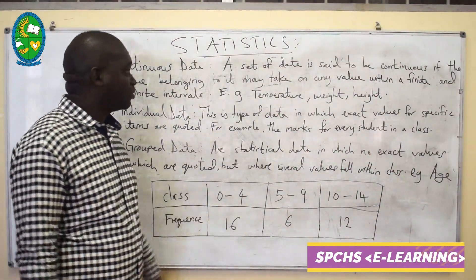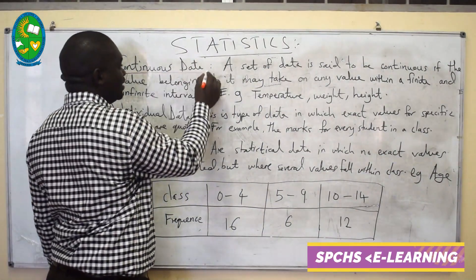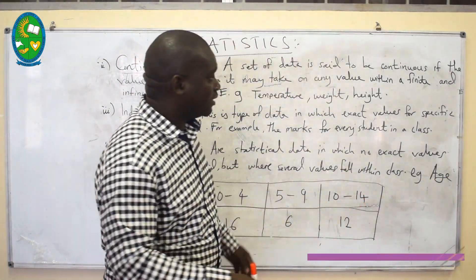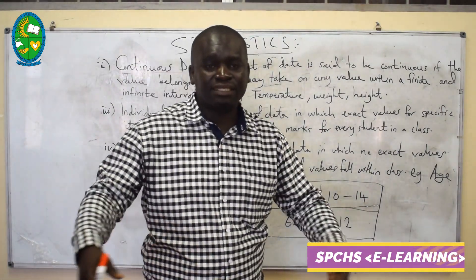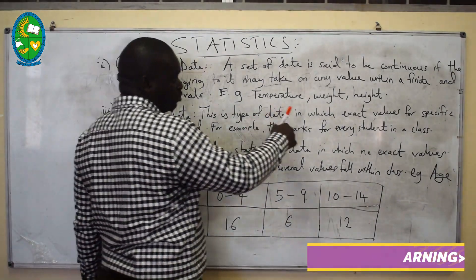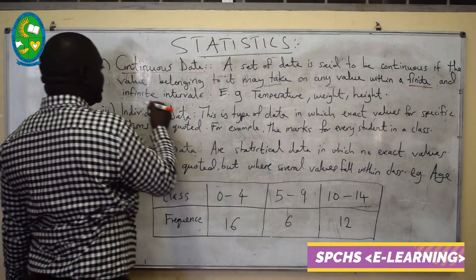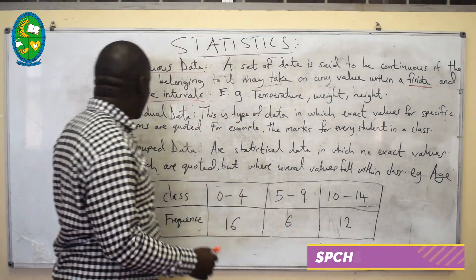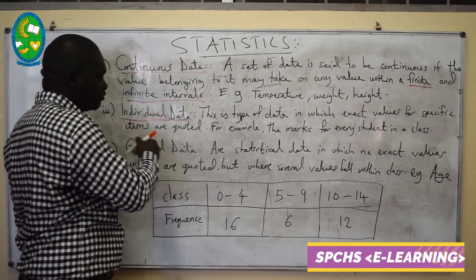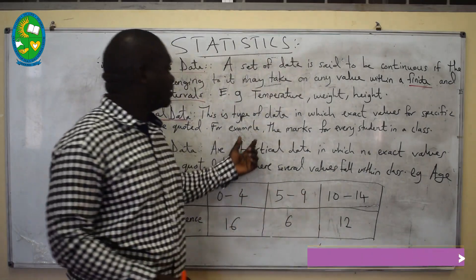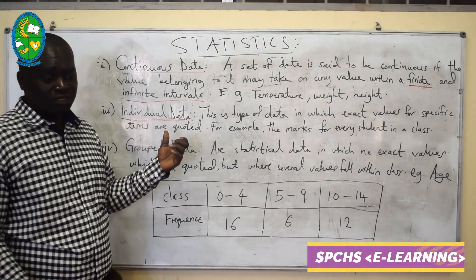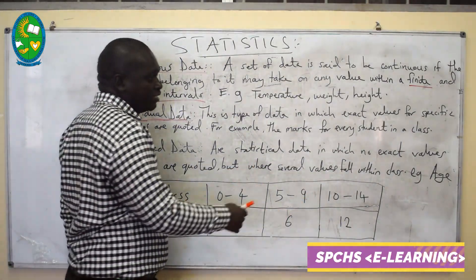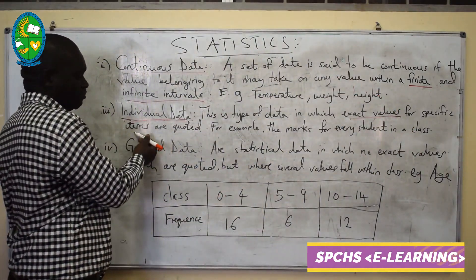Another type of statistical data is continuous data. The word 'continuous' means proceeding. Continuous data is the data which lies within a certain interval — specifically, any data which lies within infinity and infinite intervals. That's called continuous data. We also have individual data. Individual data is the type of data which gives an exact value for a specific item, or we can call it specific data. It normally deals with a specific item.